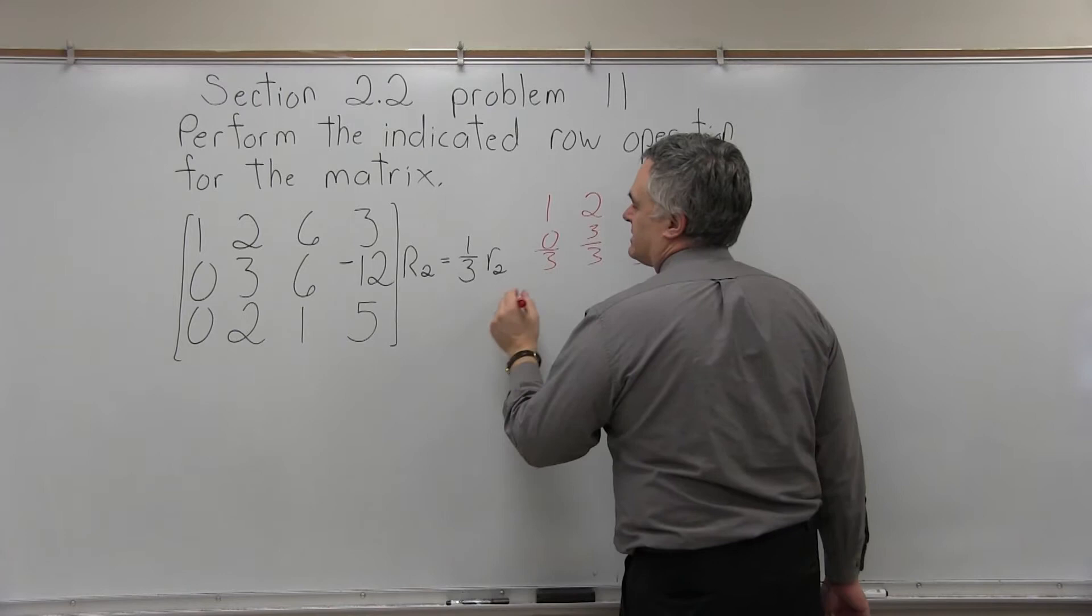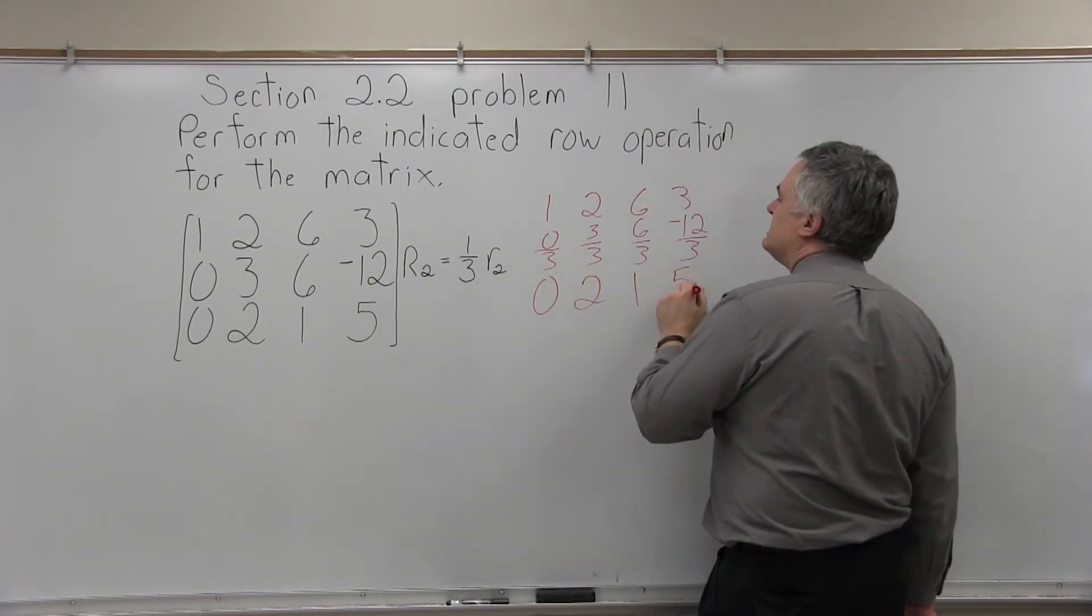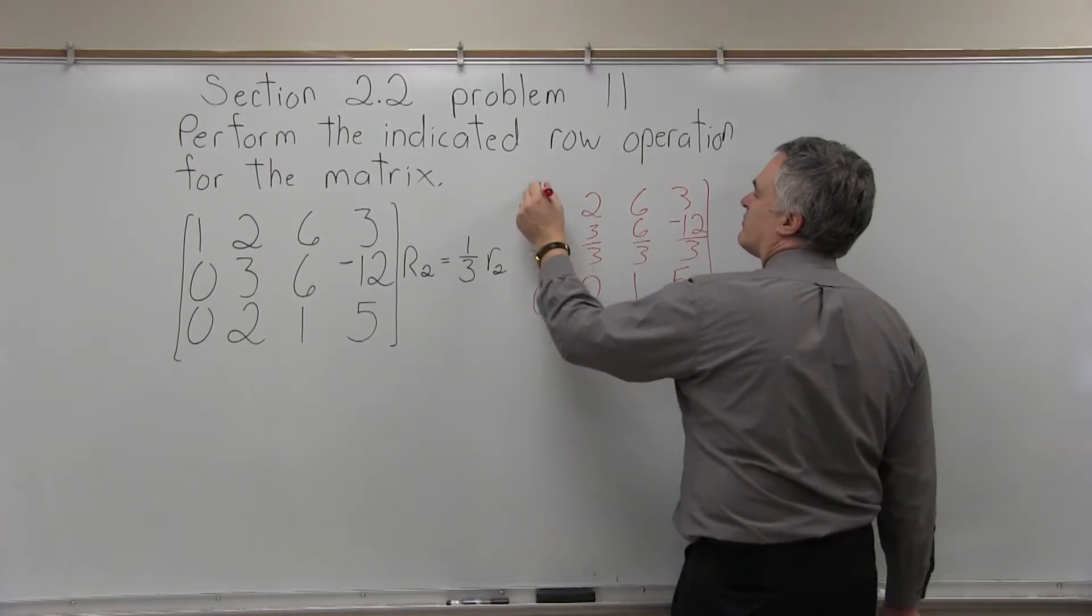And the bottom row just stays the way it is: 0, 2, 1, 5. And I will simplify that because they all simplify pretty nicely.